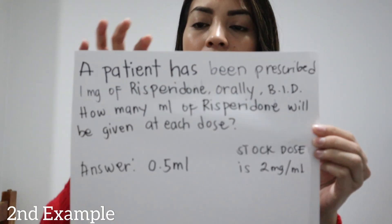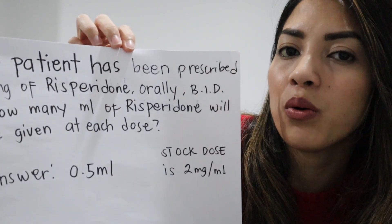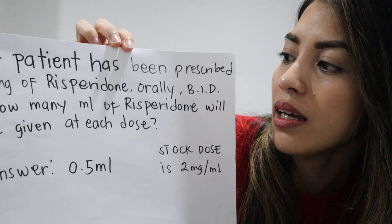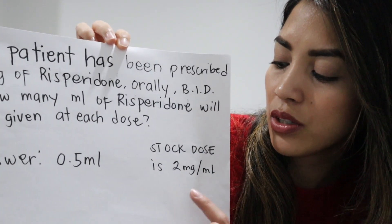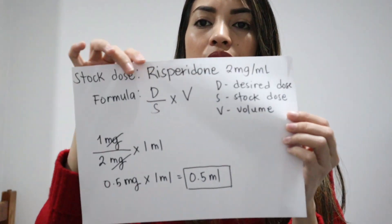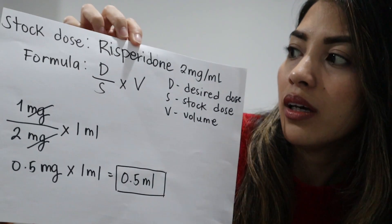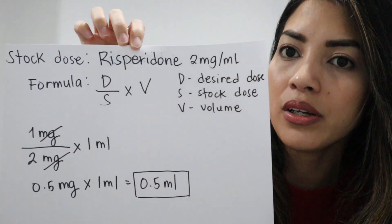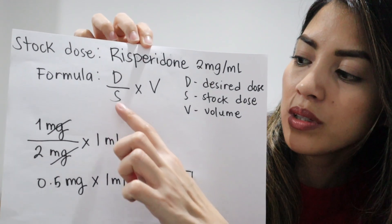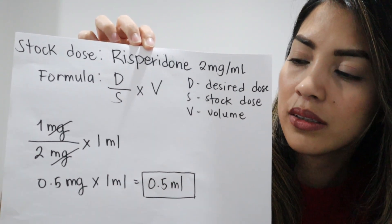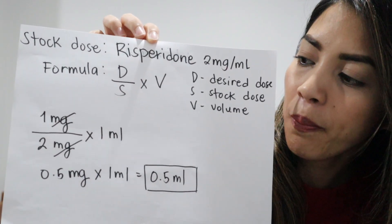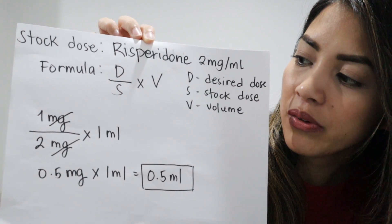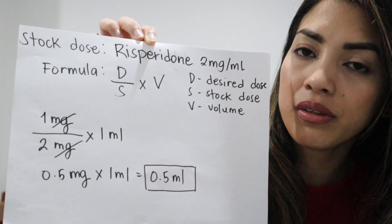Example two: a patient has been prescribed 1 milligram of risperidone orally twice daily. How many mils of risperidone will be given at each dose? The answer is 0.5 mils. The stock dose is 2 milligrams per ml. Remember the formula: D over S times volume. Desired dose is 1 mg, stock is 2 mg, volume is 1 ml. So 1 divided by 2 equals 0.5, times 1 ml — the answer is 0.5 ml.